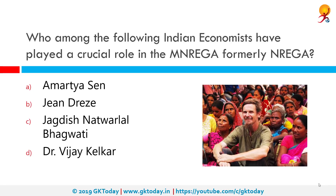Who among the following Indian economists played a crucial role in MNREGA, formerly known as NREGA? The correct answer is Jean Drèze. He is a Belgian-born Indian economist and activist who has worked on several developmental issues facing India, like hunger, famine, and gender inequality. He is well known for his commitment to social justice in India and internationally. He was recently briefly detained by Jharkhand police for his activism, making this a current affairs issue important for upcoming PSC and UPSC exams.